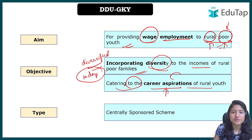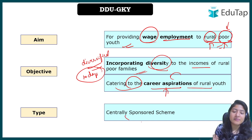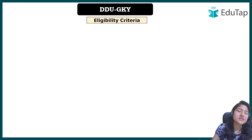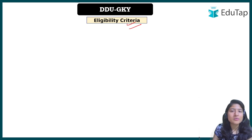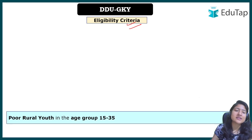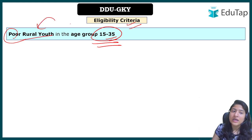Regarding the type of scheme: since DDU-GKY is part of NRLM, which is a centrally sponsored scheme, DDU-GKY is also a centrally sponsored scheme. The eligibility criteria covers poor rural youth aged 15 to 35 years.